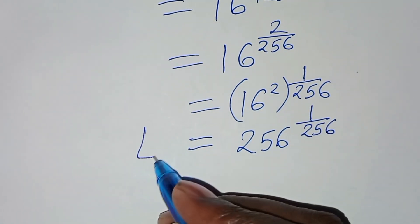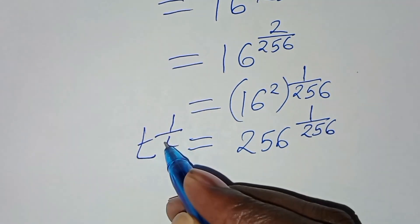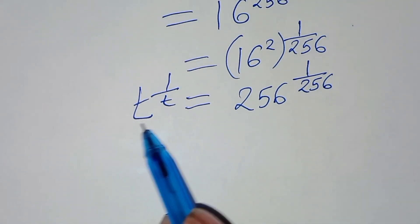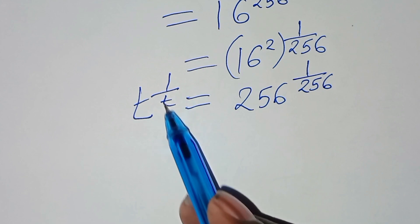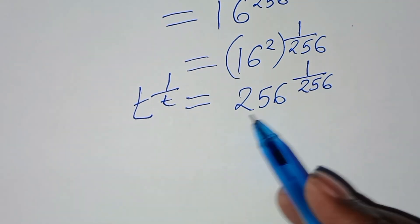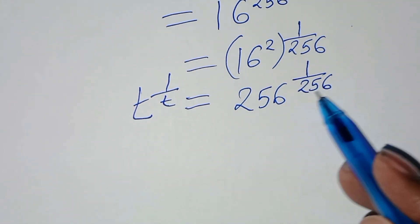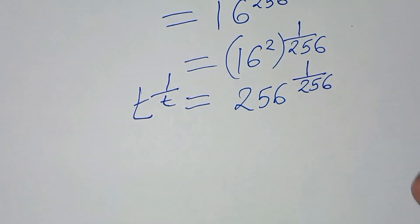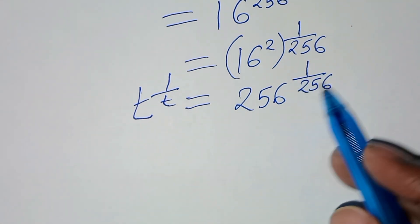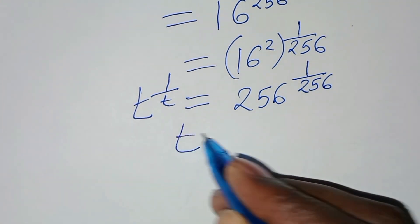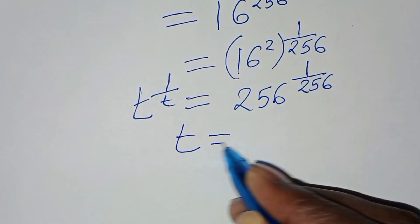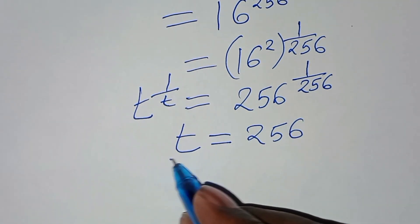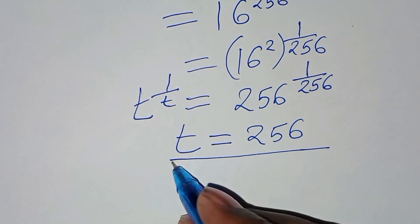And this equals t to the power 1 over t. You can see that t is equal to the exponent here — we have 256, which equals the exponent 256. Now from here, this implies that t is equal to 256. This is the value of t.